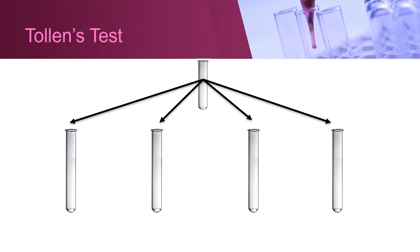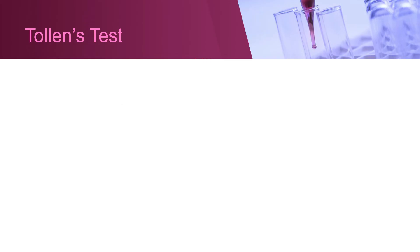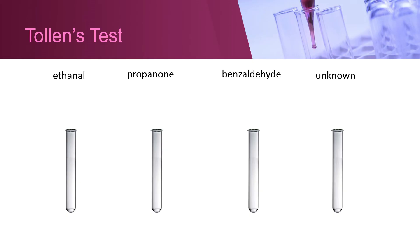Divide the Tollen's reagent equally into four test tubes. Place approximately one milliliter of ethanol, propanone, benzaldehyde, and unknown in the test tubes accordingly.